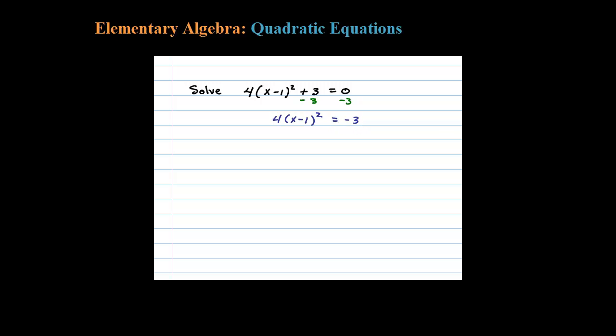Equals negative 3. Dividing both sides then by 4, X minus 1 squared equals negative 3/4. Okay, and then take the square root of both sides. Don't forget whenever you take the square root you need to include plus or minus.